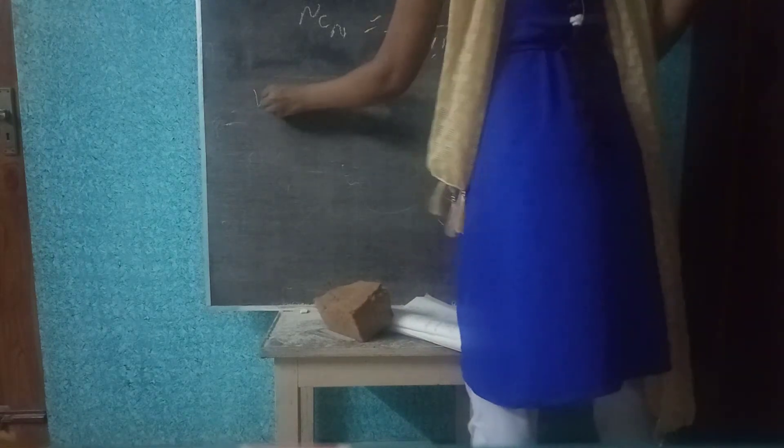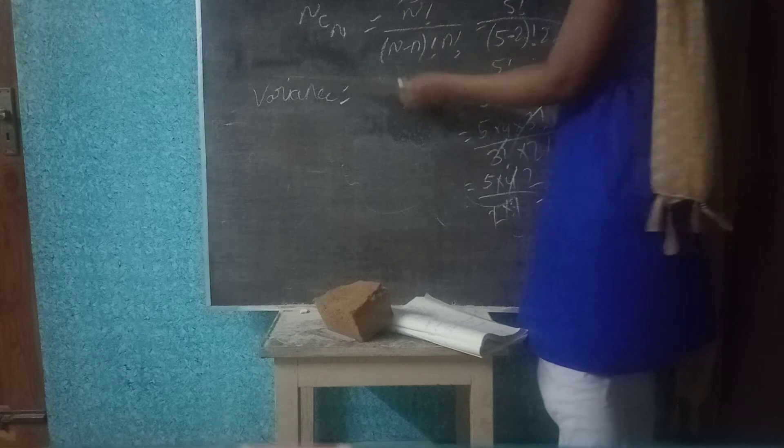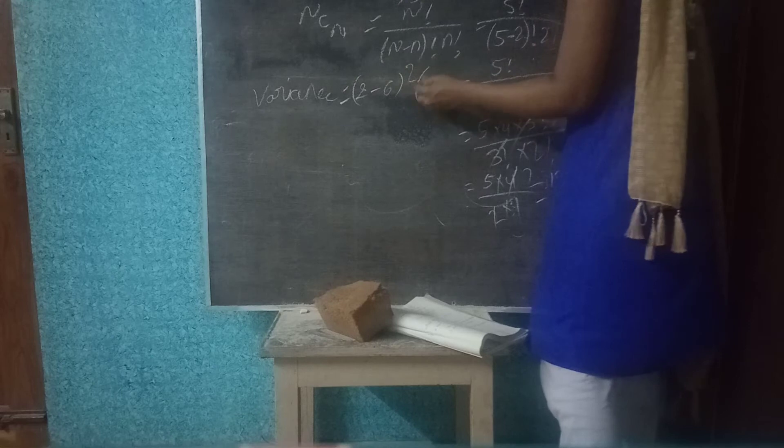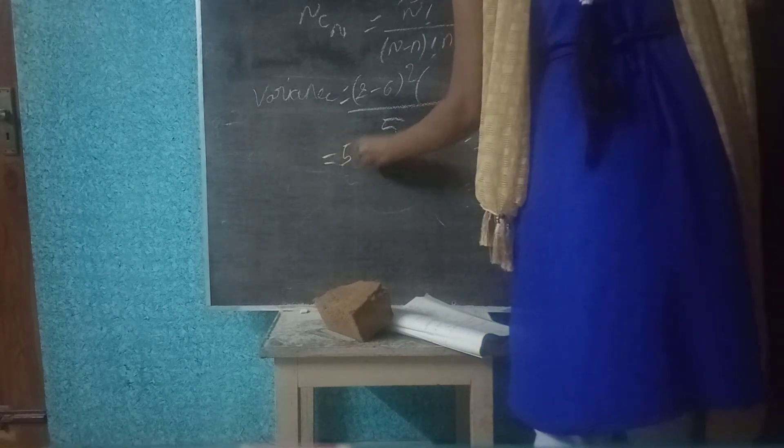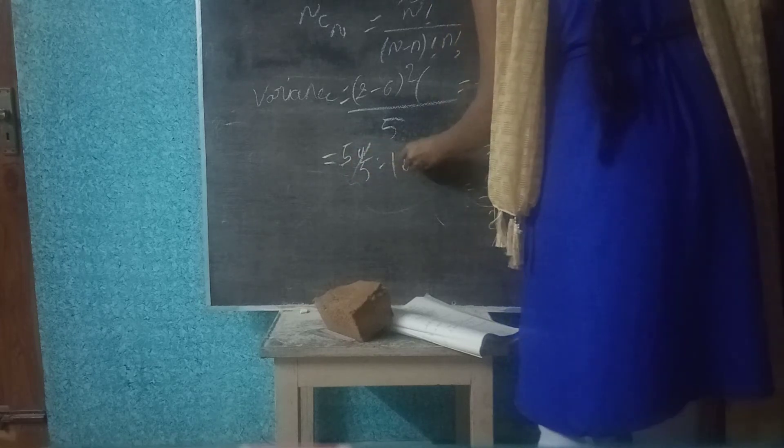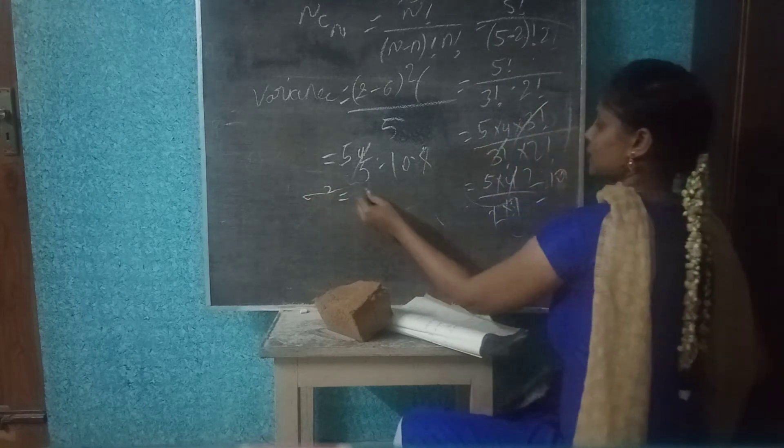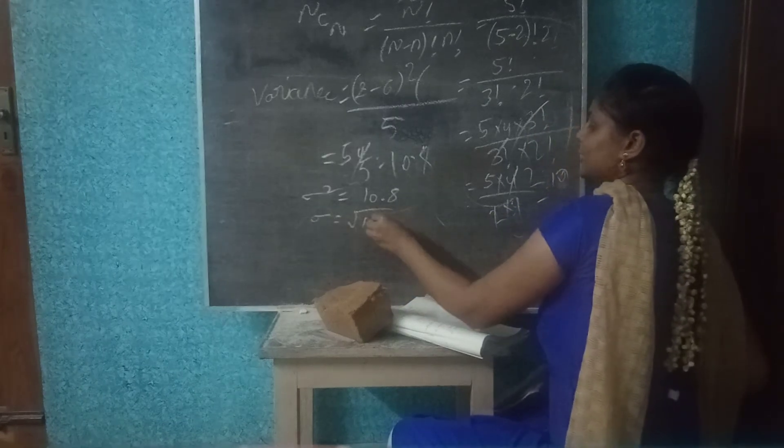We can calculate the population variance. For variance we calculate x minus x bar whole square. We add all these values and divide by 5. So variance is 54 by 5. So 54 by 5 is 10.8. Variance square is equal to 10.8.